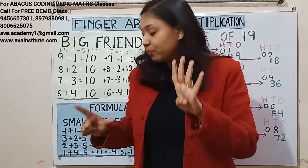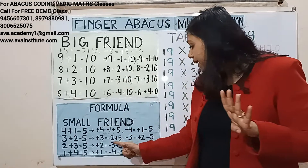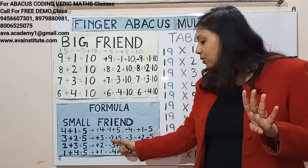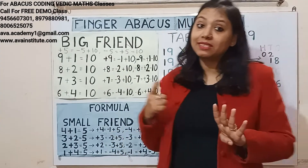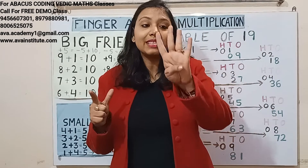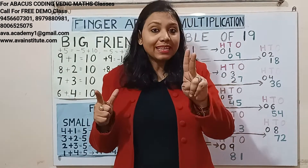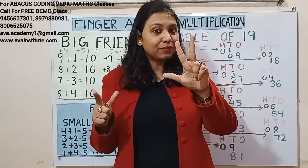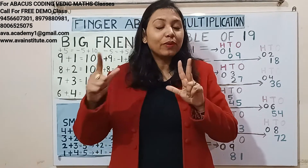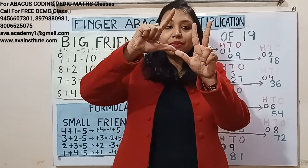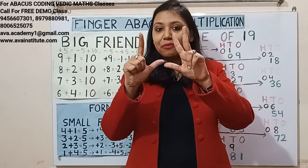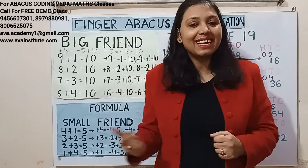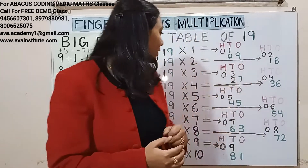How to add 30 here? Plus 3's formula is minus 2 plus 5, so plus 30's formula is minus 20 plus 50. Counting: 50, 60, 70, 70, then 5, 6 — 76 is the answer.